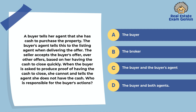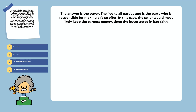A buyer tells her agent she has cash to purchase the property. The buyer's agent tells this to the listing agent when delivering the offer. The seller accepts the buyer's offer over other offers based on her having the cash to close quickly. When the buyer is asked to produce proof of having the cash to close, she cannot. Who is responsible for the buyer's actions? The buyer, the broker, the buyer and buyer's agent, or the buyer and both agents. The answer is the buyer. The buyer lied to all parties and is responsible for making a false offer. The seller would most likely keep the earnest money since the buyer acted in bad faith.